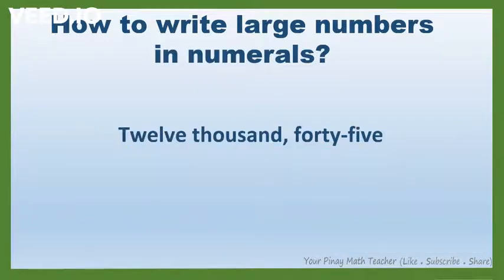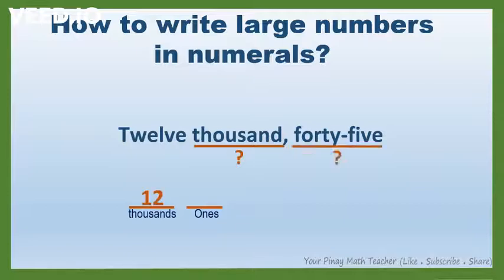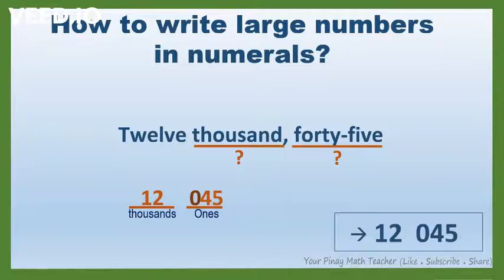Next example: 12,045. In this number, the highest period is the thousands period. So, we have two groups of digits or two periods. How many thousands are there? There are 12. And there are 45 ones. Since in the ones period there are only two digits, we have to put a zero before 45. So, this is the numeral for 12,045.